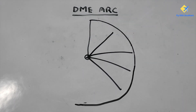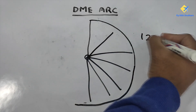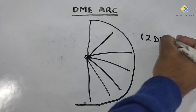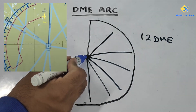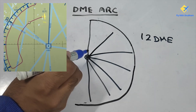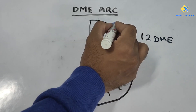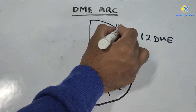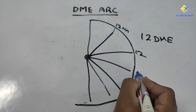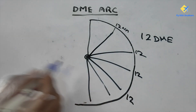The entire DME arc has a common distance. Let's take an example where we are doing a 12 DME arc. The distance of 12 nautical miles from the station — which is the reference point — will be 12 nautical miles at all points on the DME arc: 12 here, 12 here, 12 here, and every single point throughout all 360 degrees.